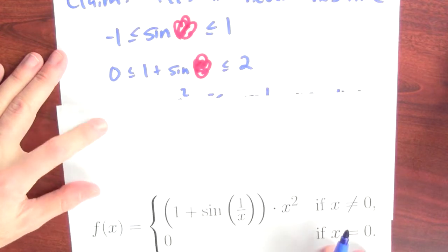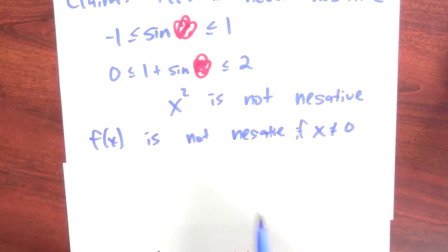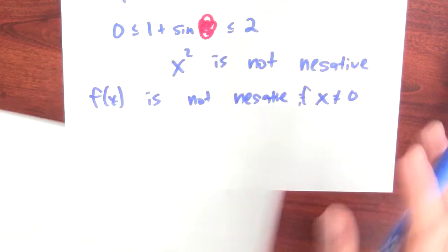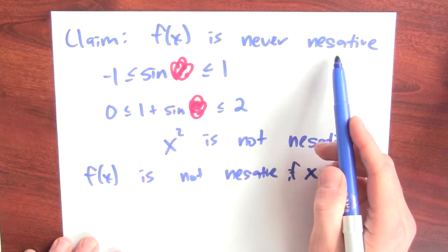As long as x isn't equal to 0, I'm in this first case, and this is a non-negative number times a non-negative number, so the product is also non-negative. Now, the other possibility is that I plug in 0 for x, but then f of 0 is just by definition 0, and that means in either case, no matter what I plug in for x, f of x is never negative.